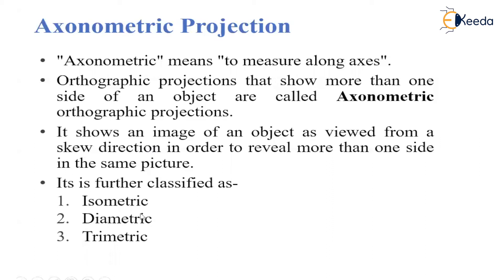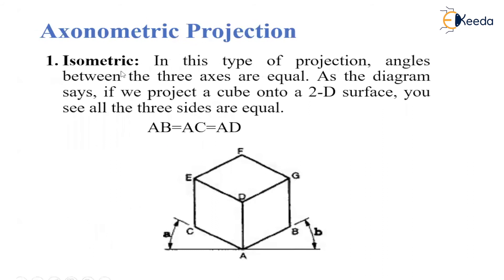Axonometric projection is further classified into three types. First is isometric projection. In this projection, the angle between the three axes are equal, like an equilateral triangle. So the three sides are equal: AB equals AC equals AD. All three angles will be equal in isometric projection.